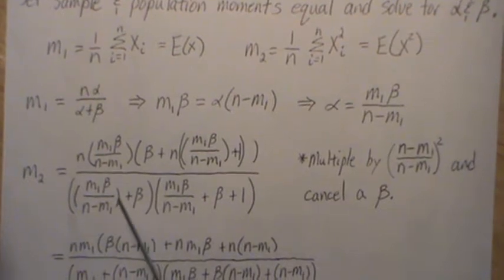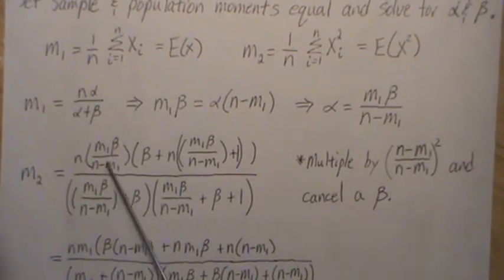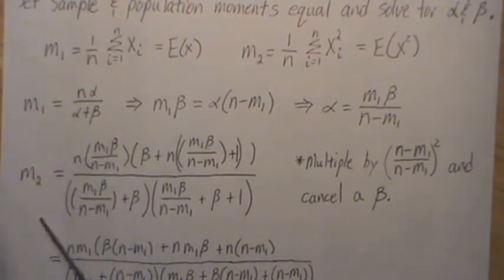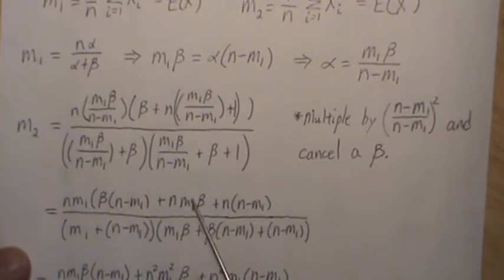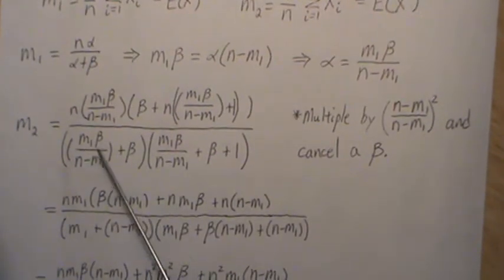But then I also want to cancel a beta. So there's a beta common here, so I factored it out. And there's a beta there, so we just cancel those. That's what this next step represents.